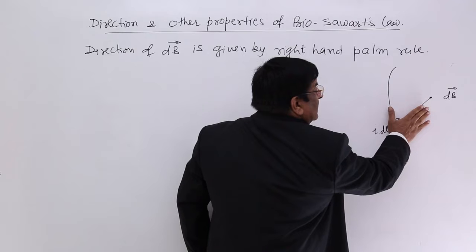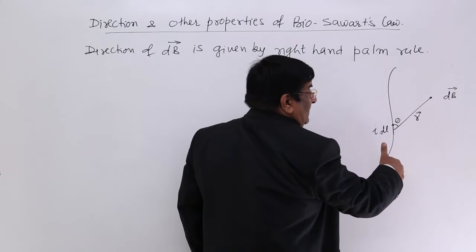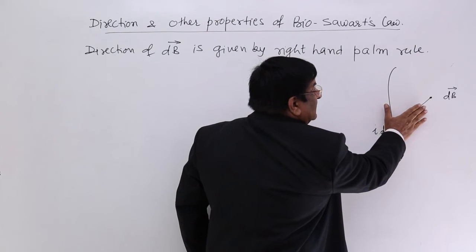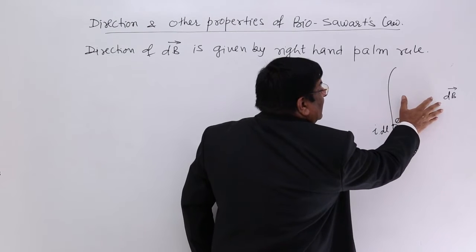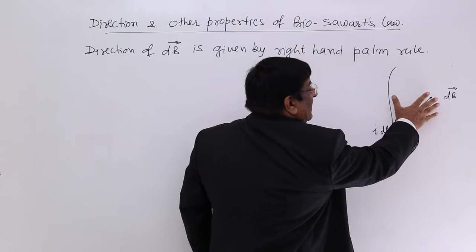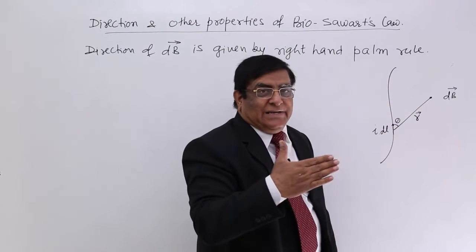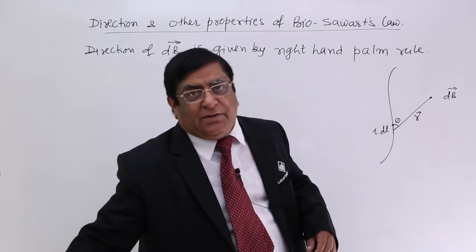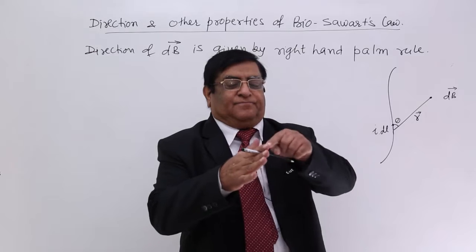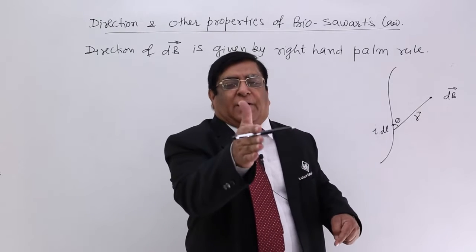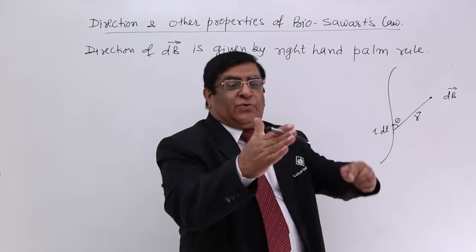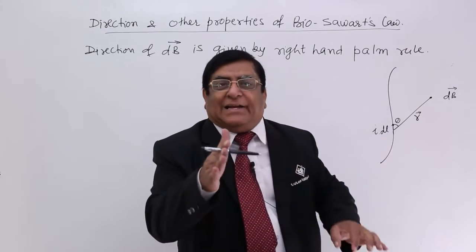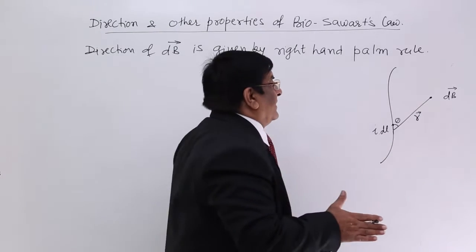This way. So this is in the direction of I. This is in the direction of R. And when I reach here this is my palm. Then I make a right angle on my palm and that right angle will be this right angle on the palm. So this gives the direction of magnetic field at this point.